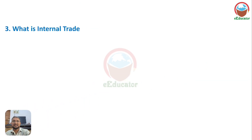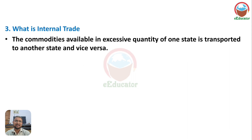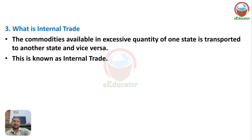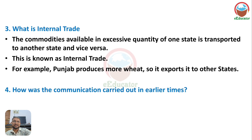Question: What is internal trade? Commodities available in excessive quantities in one state are transported to another state — this is known as internal trade. For example, Punjab produces more wheat and exports it to other states through internal trade.